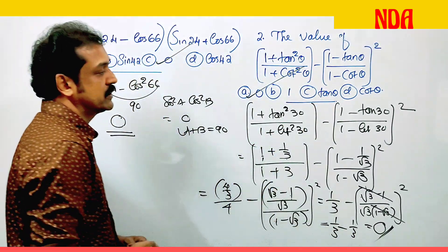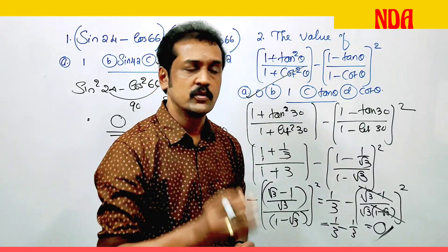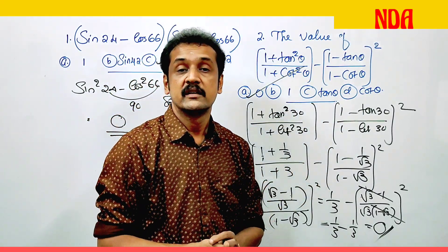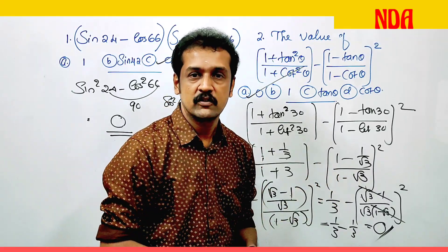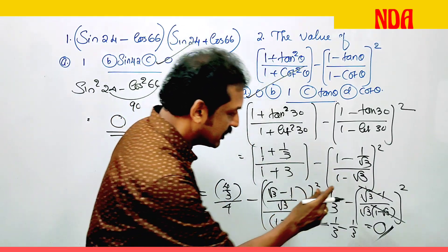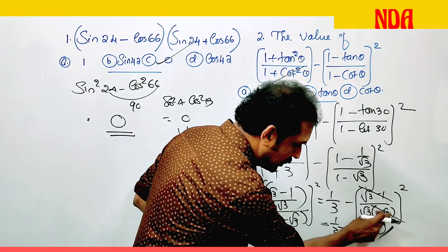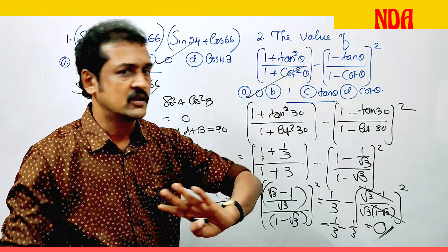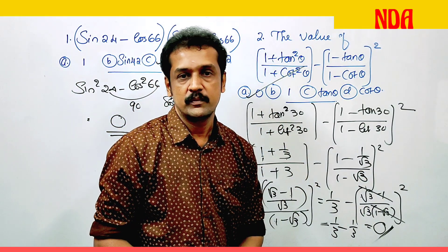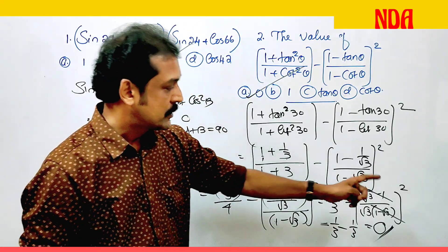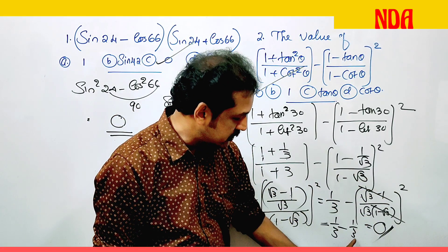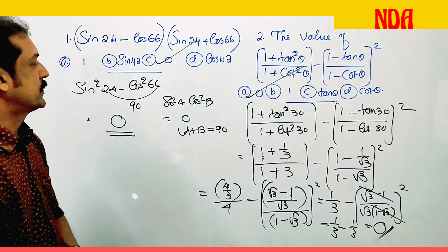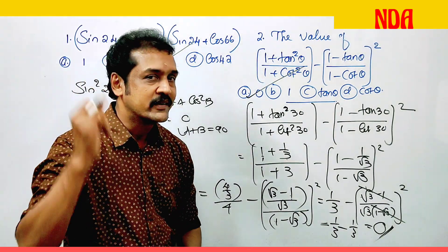This is the suitable method. In simplification, we can cancel out root 3 minus 1 and root 3 terms. We will continue this in the next class. See you all. Bye!